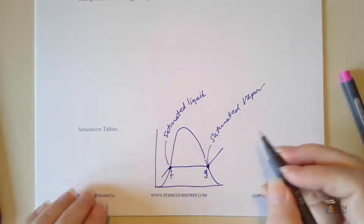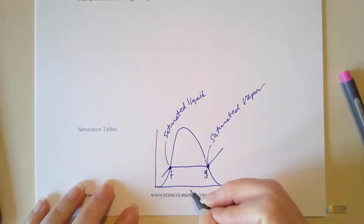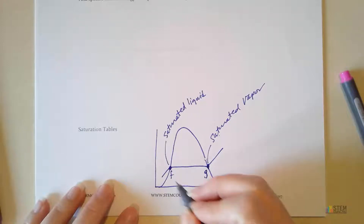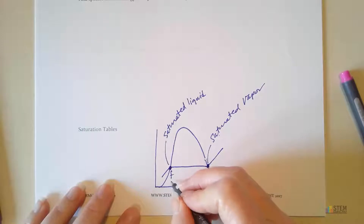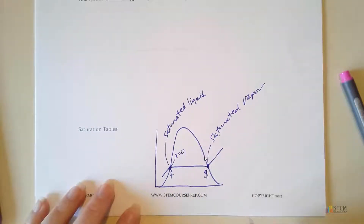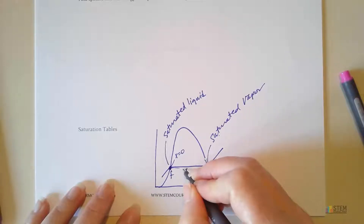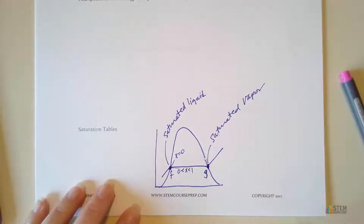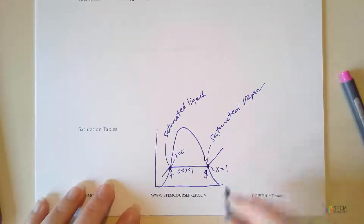We also talked about a term called quality. Quality was just a measure of the water vapor in your mixture. If we have saturated liquid, we still have all liquid, so X is going to be zero. Inside the vapor dome, where we have the liquid vapor mixture, X is going to be greater than zero but less than one. And then over here we have all vapor, so X is going to be one.